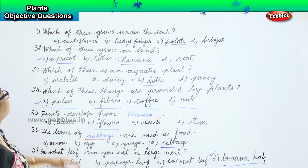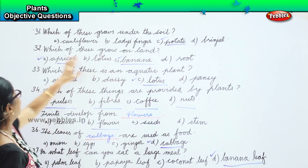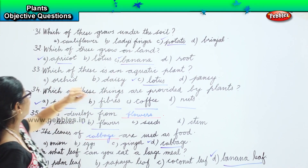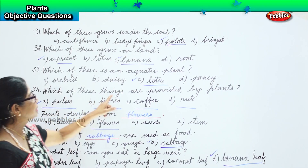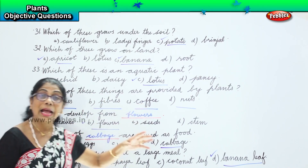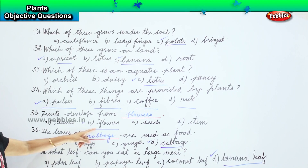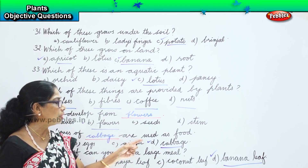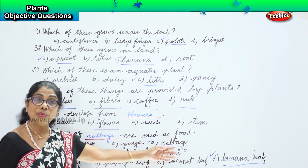Let's recap all our questions and answers. Which of these grows under the soil? Potatoes. Which of these grow on land? Apricot and banana. Which of these is an aquatic plant? Lotus. Which of these things are provided by plants? Pulses, fibres, coffee, and nuts. Fruits develop from flowers. The leaves of cabbage are used as food. On what leaf can you eat a large meal? Banana leaf.